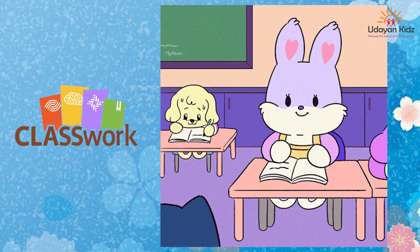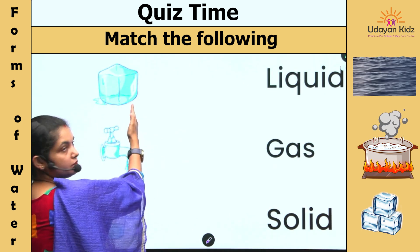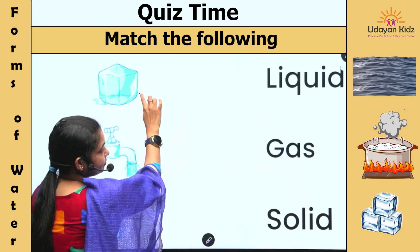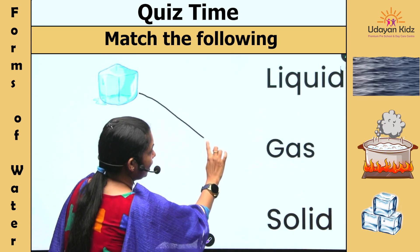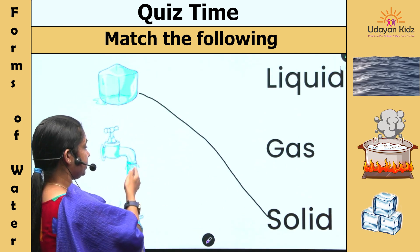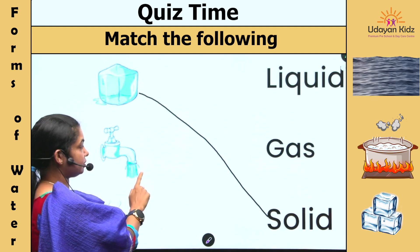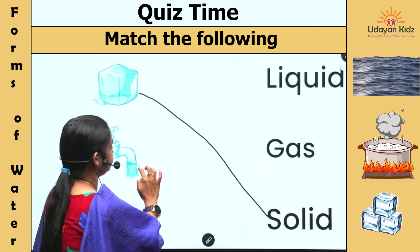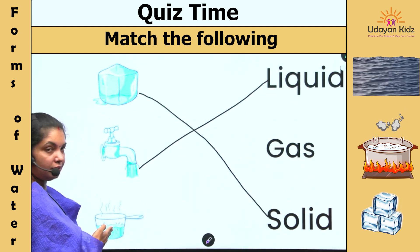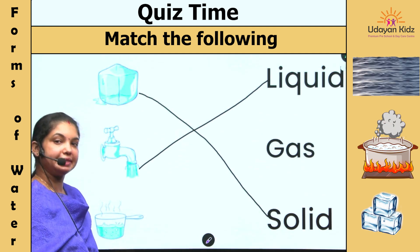Let's solve the question — it's quiz time! Match the following. What is this? Very good, this is ice, and it is also called solid. And what is this? Which image is this? This is a liquid. And this is water vapor, and water vapor is also called gas.